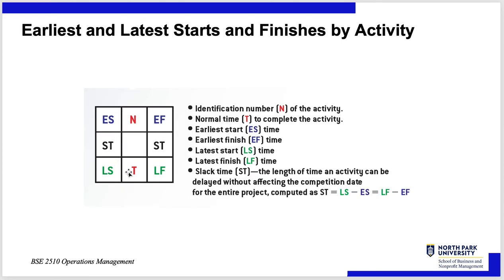One way of looking at each task node is a square containing: the activity letter or ID, the expected duration T, early start, early finish, late start, and late finish. If the activity is on a critical path, the early start equals the late start and the early finish equals the late finish. The slack time is the difference between late start and early start — or equivalently late finish minus early finish. Anything on a critical path will have zero slack time. This gives you a lot of information in a single node.